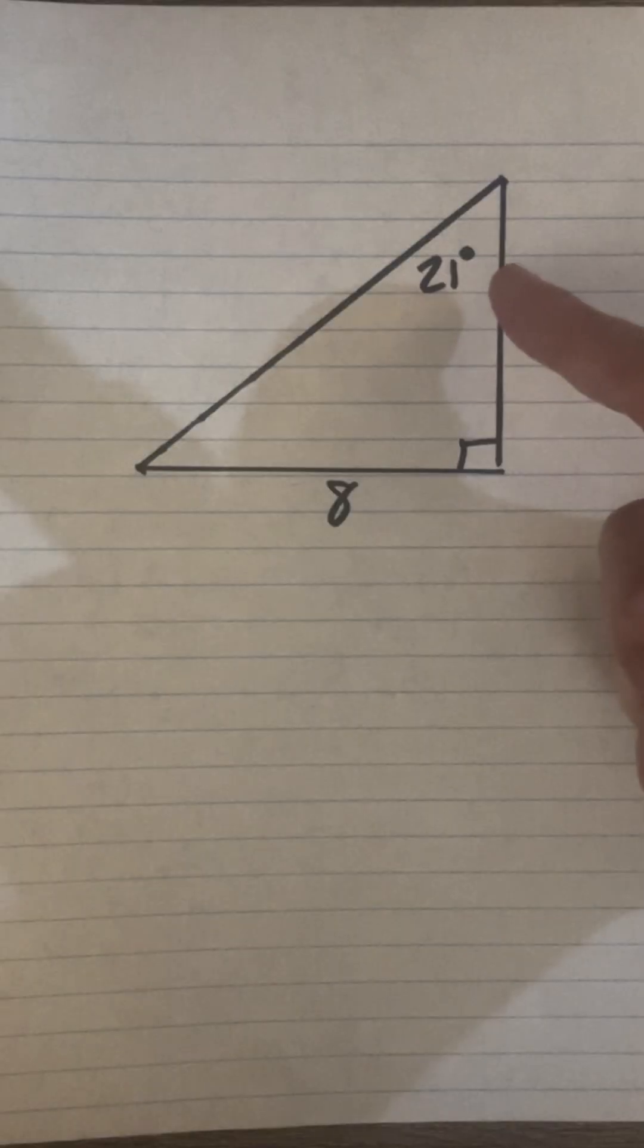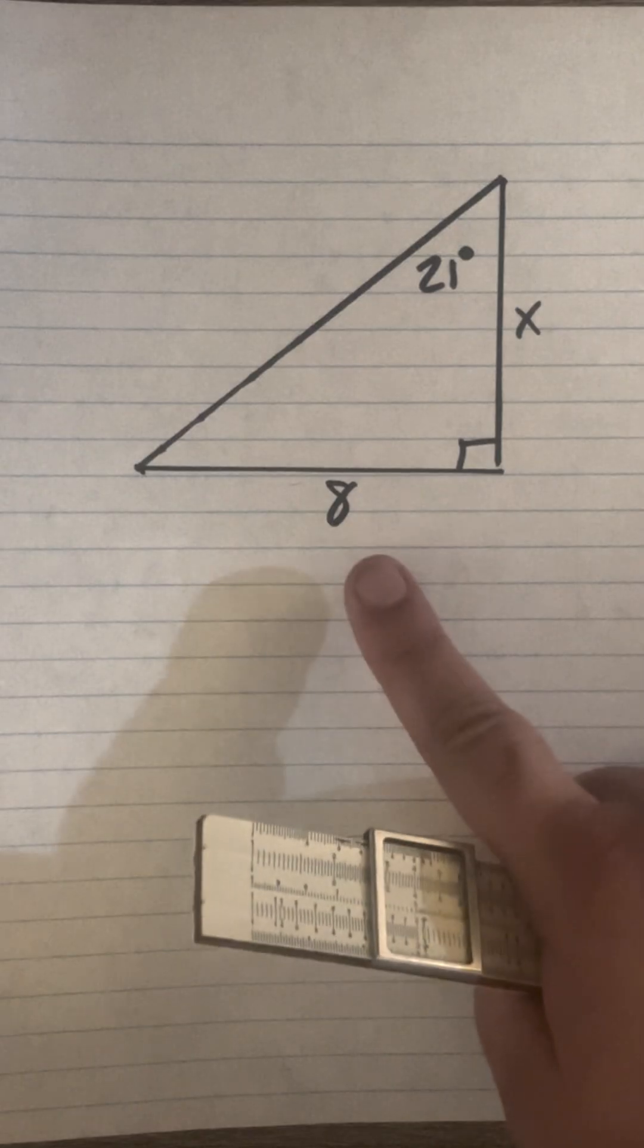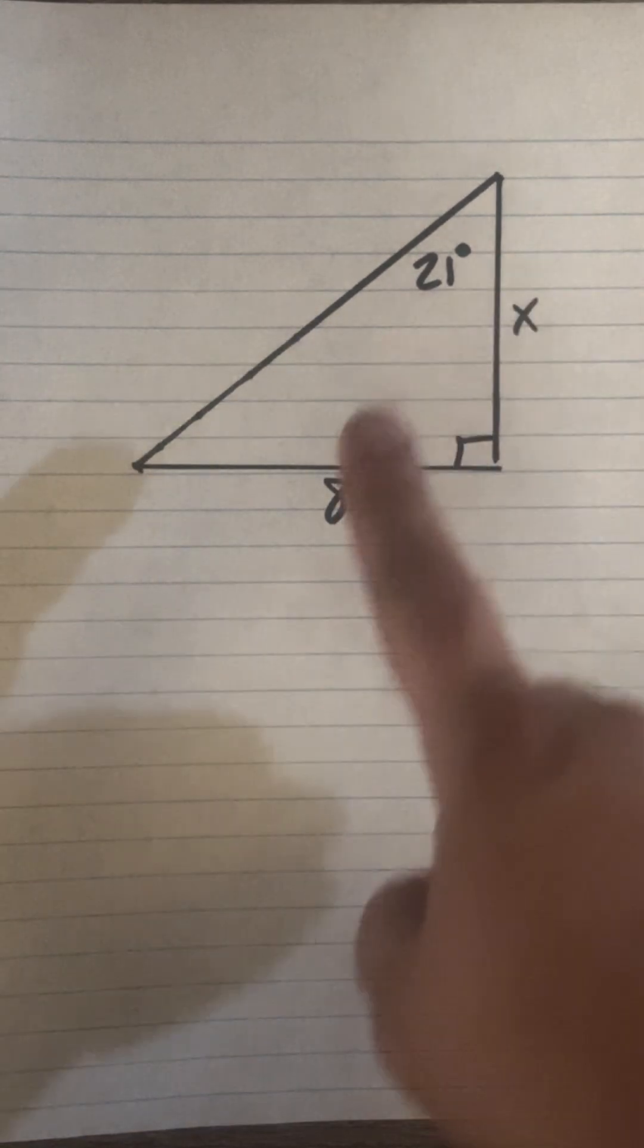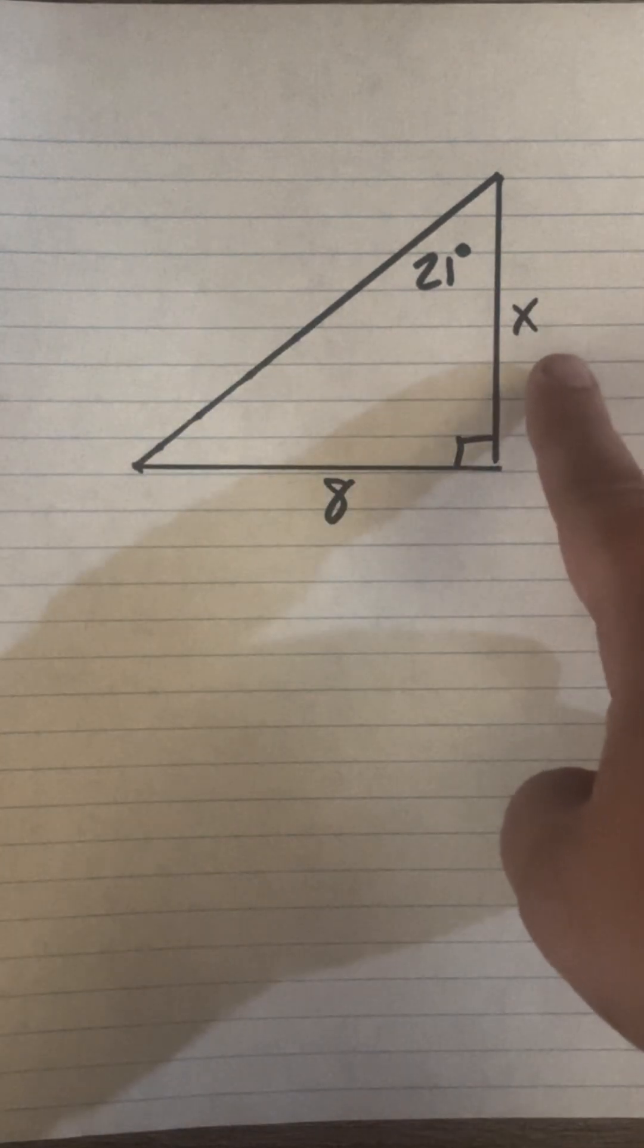Alright guys, let's solve for x. I have angle 21, one side known that's 8, and we're going to solve for x. From our angle we know we have opposite and adjacent, that's going to give us TOA, which is tangent.